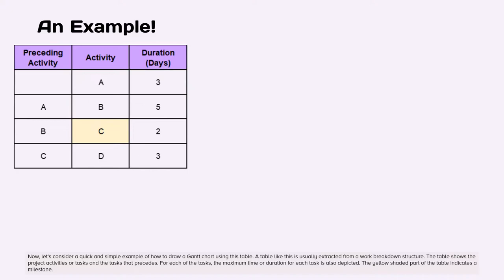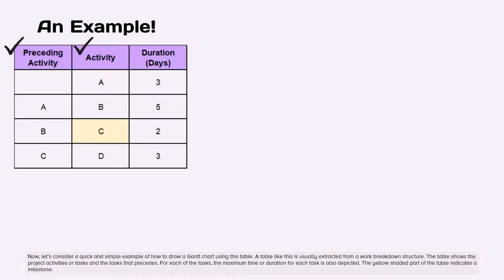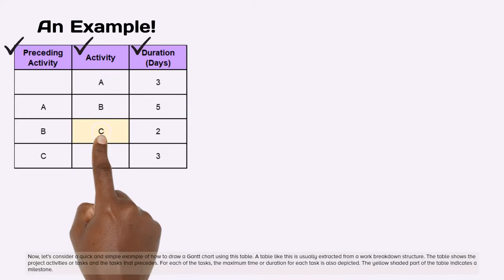Now, let's consider a quick and simple example of how to draw a Gantt chart using this table. A table like this is usually extracted from a work breakdown structure. The table shows the project activities or tasks and the tasks that precede them. For each of the tasks, the maximum time or duration for each task is also depicted. The yellow shaded part of the table indicates a milestone.